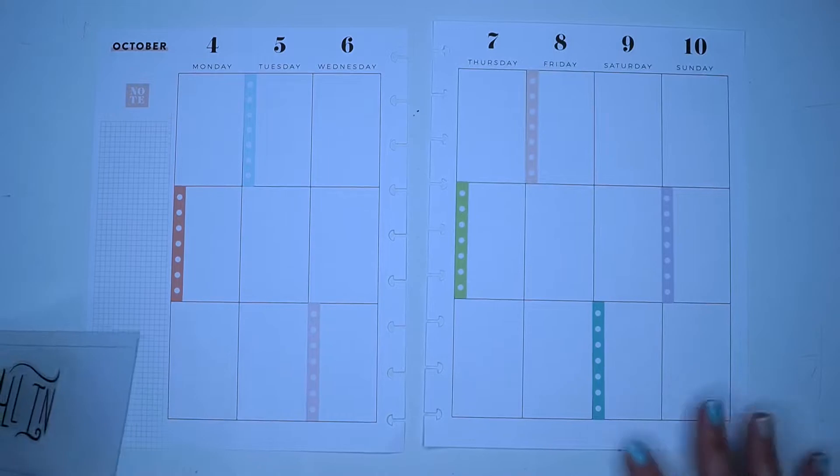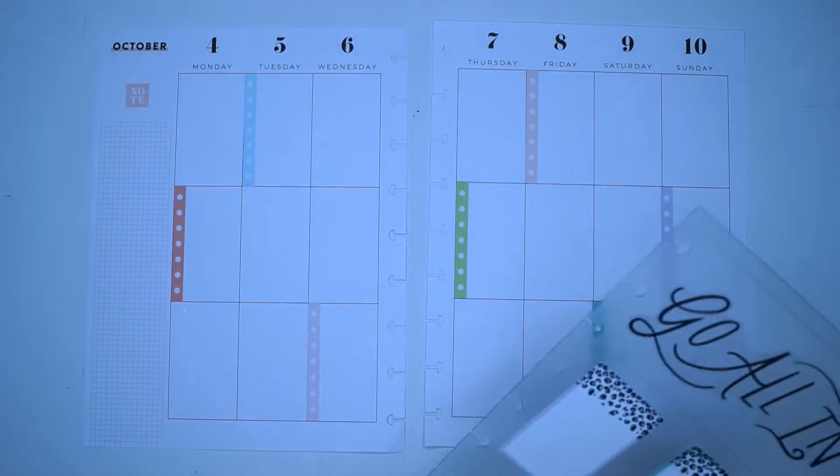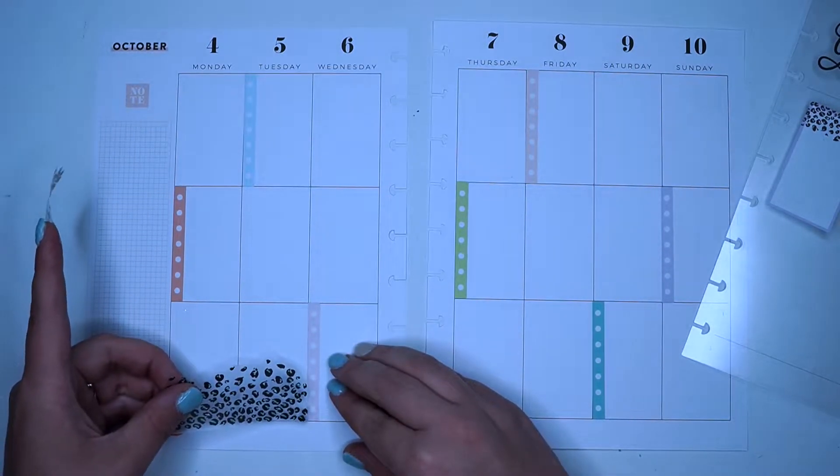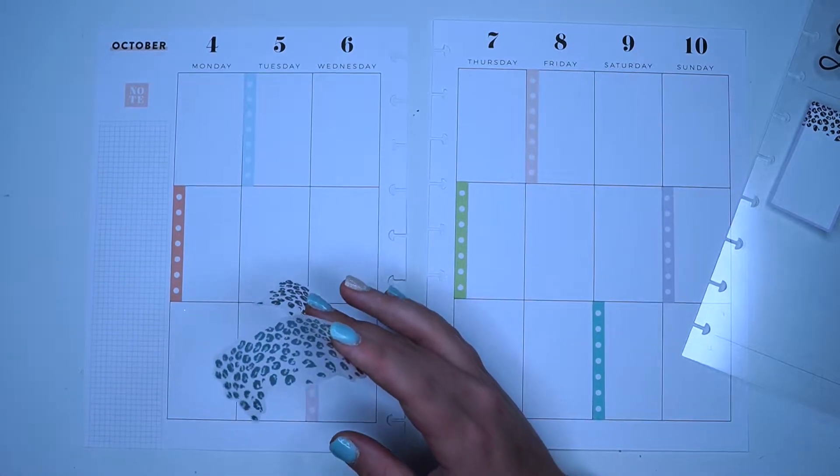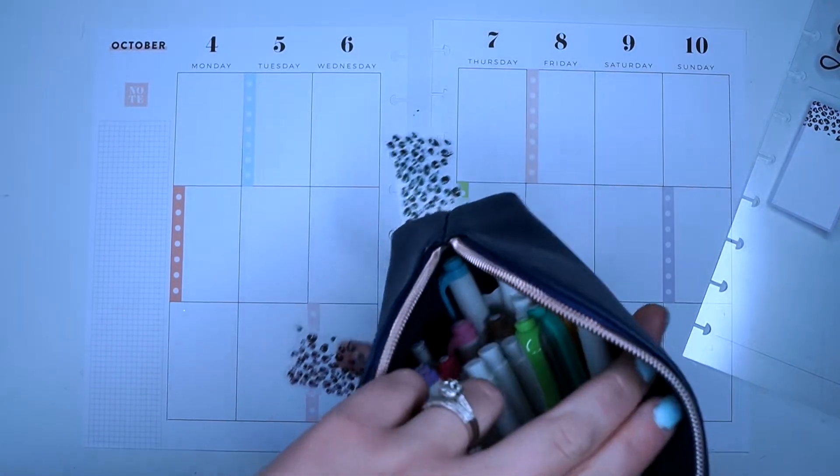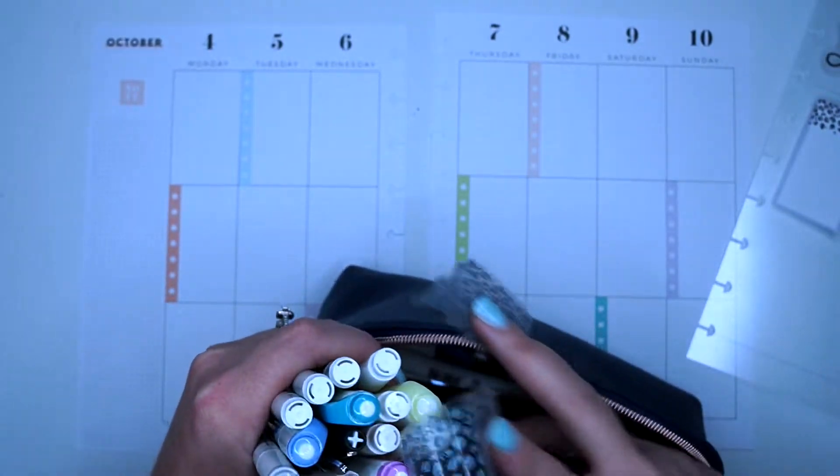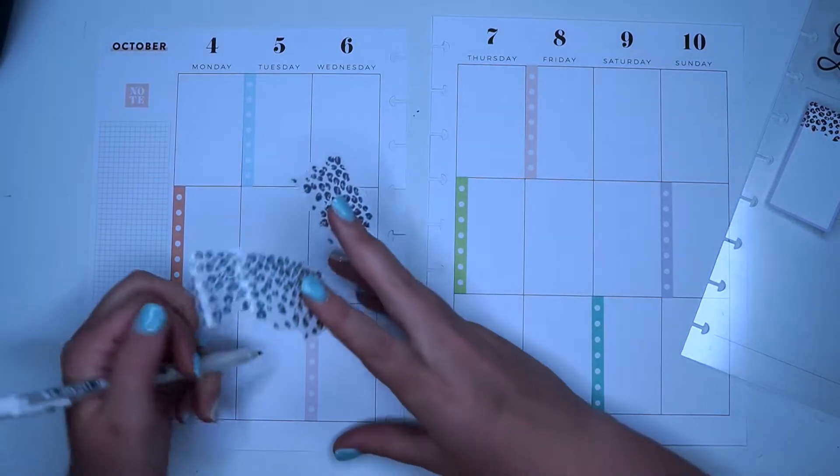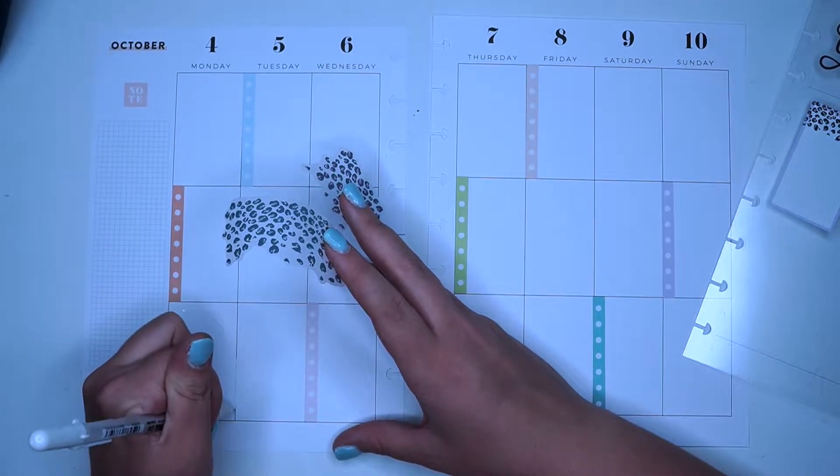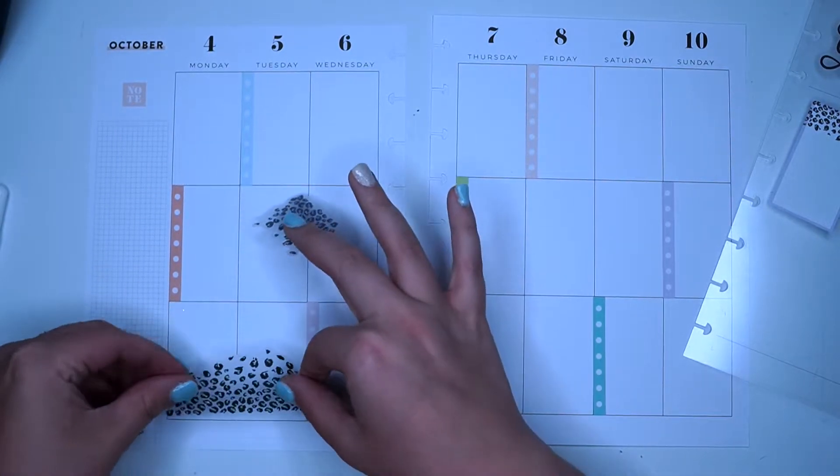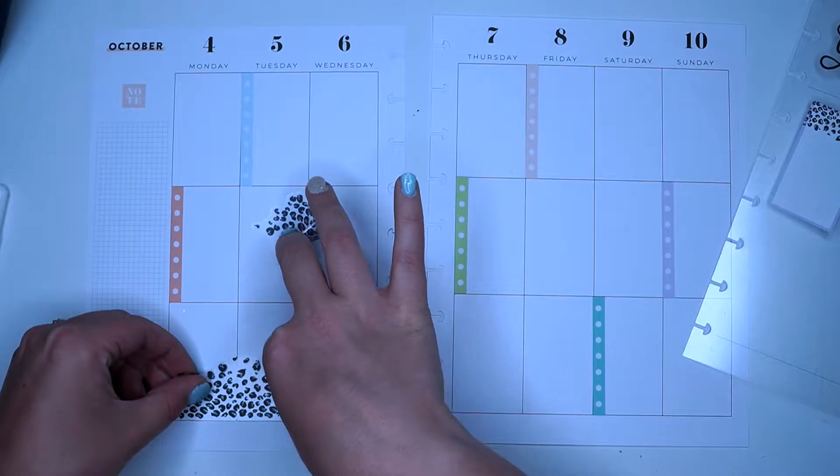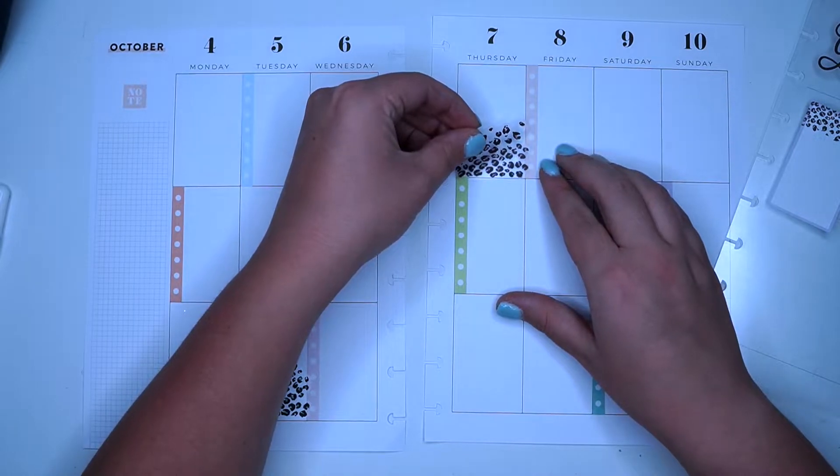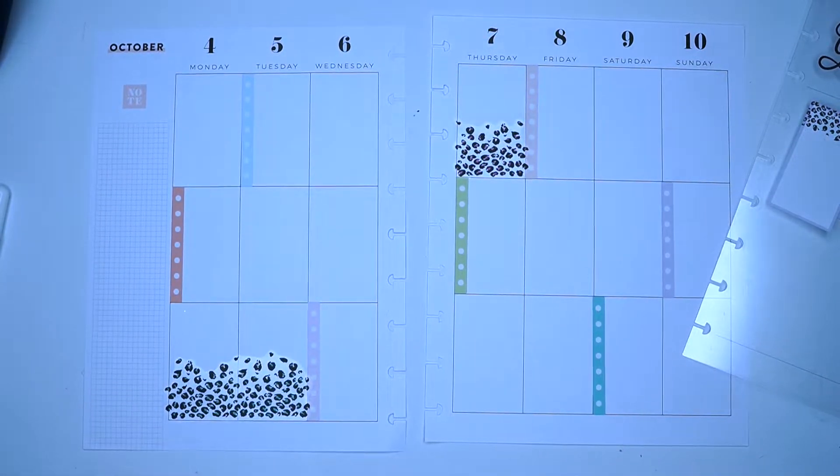It's just fun to have things kind of in different places sometimes just to mix up what you're doing and how you're planning. I am going to put that one there, but I need to jelly roll that black line out. Love my jelly roll, just so that this sticker is nice and cohesive right in the middle of those two boxes.